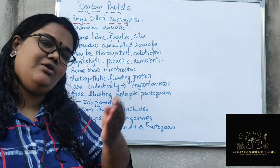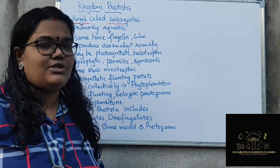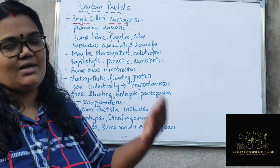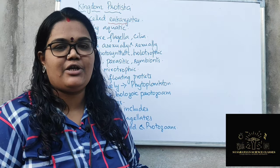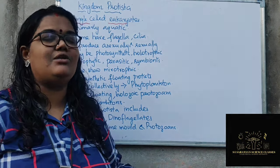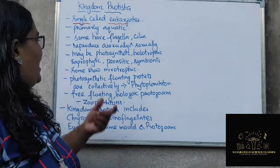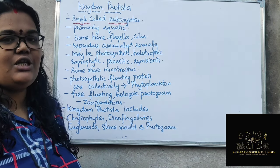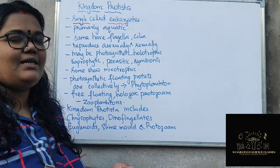Protista can undergo both sexual and asexual reproduction. Asexual methods include binary fission and transverse fission, among every type of reproductive method. So both sexually and asexually, they are capable of reproducing.